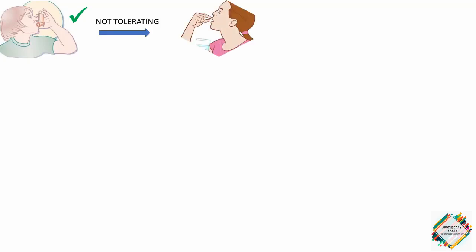Beta-2 agonists are administered via inhalation — dry powder inhalers, nebulizers, or metered-dose inhalers with or without a spacer — unless the patient cannot use the inhaler properly, in which case an oral agent is used cautiously. Beta-2 agonists of the same duration should not be used in combination, as an adequate dose of a single agent provides peak bronchodilation. However, it is reasonable to administer a long-acting product such as salmeterol or formoterol on a regular basis with a short-acting agent reserved for as-needed or rescue therapy.